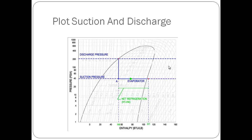In order to find the enthalpies of these two points, you need two values to identify each point. Point A is defined by the discharge pressure of the condenser and zero degrees of subcooling, shown on the saturated liquid curve. We take this point down to H4 to find the enthalpy entering the evaporator.